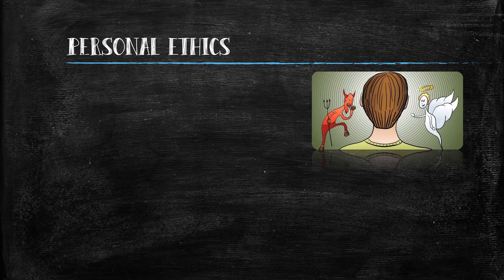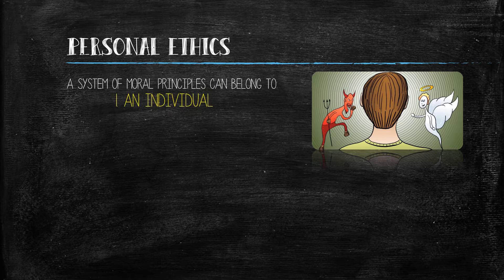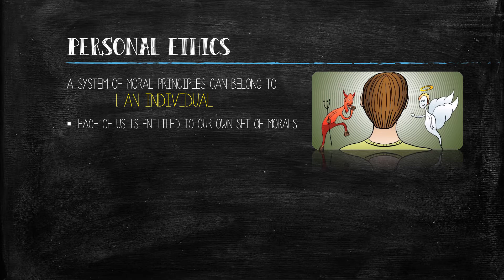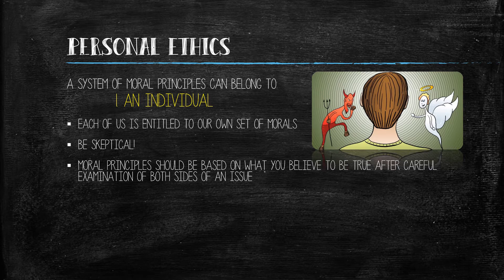The first question can have several answers. A system of moral principles can belong to an individual. Though many standards of ethics are shared among a particular society or culture, each of us is entitled to our very own set of morals. Remember how we learned that critical thinking requires us to become skeptics in order to come to a reasonable conclusion about a topic? The same idea can be applied here. Moral principles should be based on what you believe to be true after careful examination of both sides of an issue.